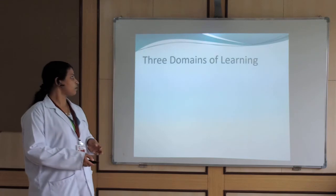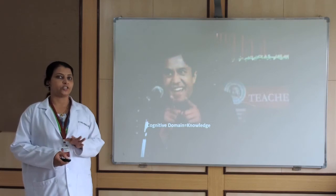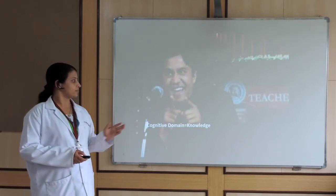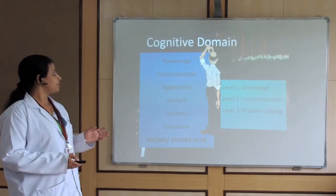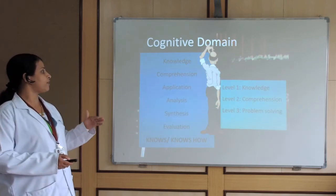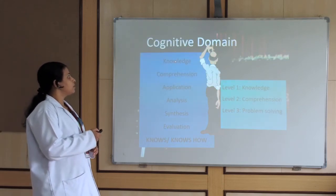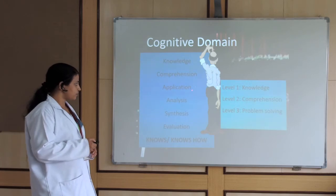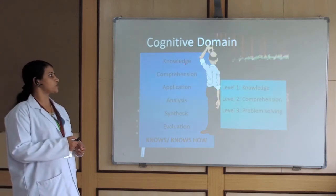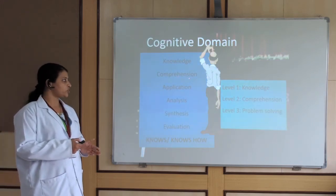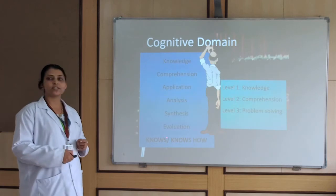The first is the cognitive domain, also called the domain of knowledge or the domain of mind. It deals with only knowledge. This cognitive domain is further divided into various levels. As the course advances, students are assessed at higher levels of the domain — knowledge, comprehension, application, analysis, synthesis, and evaluation. This domain deals with 'knows' and 'knows how.'